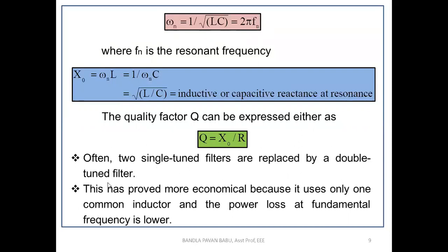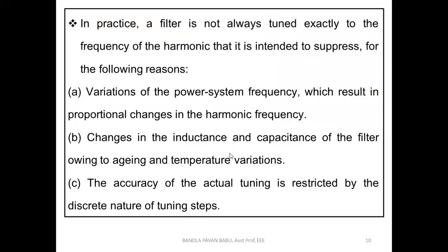Often two single tuned filters are replaced by a double tuned filter — instead of using separate filters for two different harmonics, a double tuned filter is more economical because it uses only one common inductor and the power loss at the fundamental frequency is lower. Reducing filter utilization reduces impedance, which helps in reducing power losses at the AC side.